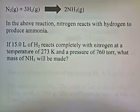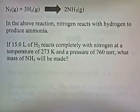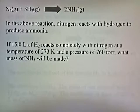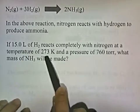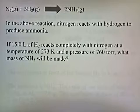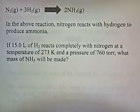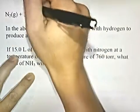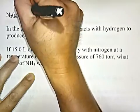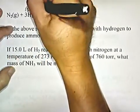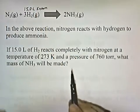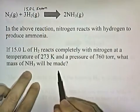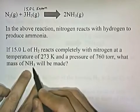Let's try a problem. In the above reaction, nitrogen reacts with hydrogen to produce ammonia. If 15 liters of H2 reacts completely with nitrogen at 273 Kelvin and 760 Torr — that's standard temperature and pressure — what mass of NH3 will be made? So 15 liters of H2 is the known, and the grams of NH3 is the unknown.